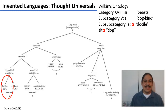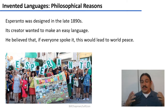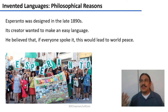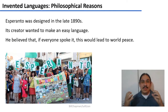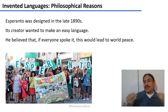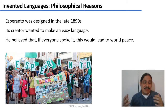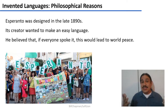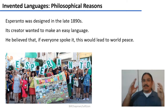Another reason to make a language is to reflect a certain philosophy or belief. This is how Esperanto was born. Esperanto was designed in the late 1890s by Ludwig Zamenhof. He was from Poland and lived in a very multilingual community in the Russian Empire where people didn't get along, and he thought the thing that kept people apart was language. If only there was a simple language that everyone could speak, everyone would get along. Unfortunately, we know that even people who share a language still find plenty of reasons to fight. Nevertheless, Zamenhof saw that in his community and tried to make a language that would make the world more peaceful.